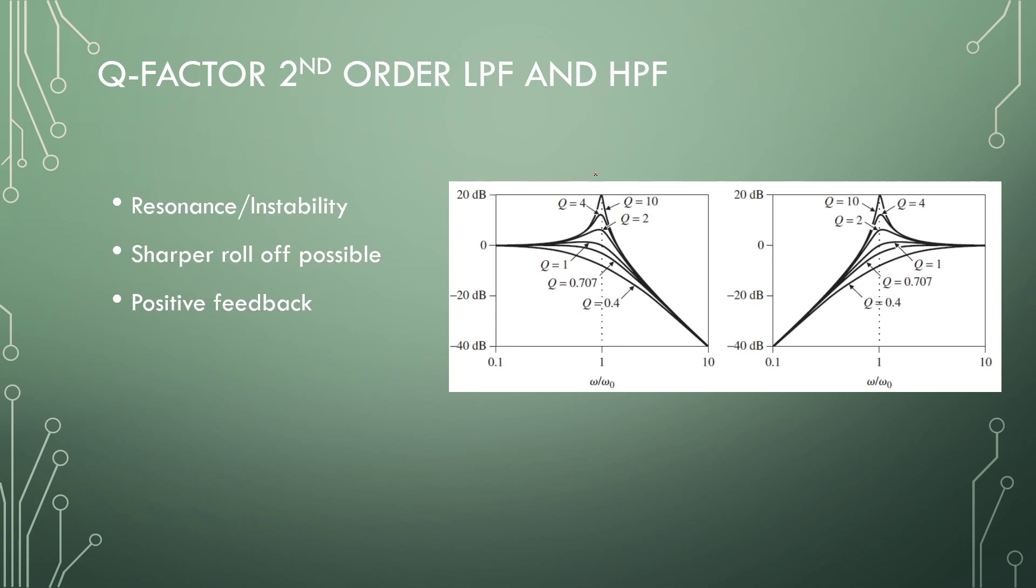In terms of high pass and low pass filters, we typically have a natural response. So a second order filter has a minus 40 decibel per decade cutoff rate. The lower the Q, the longer that it takes to go down. The higher the Q, the gain will first go up, and then start to decrease, but at the same rate. So if this Q grows to be too large, we can have resonance or instability.